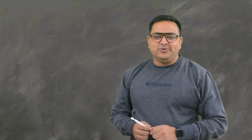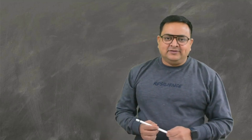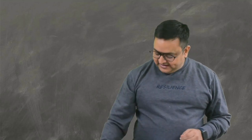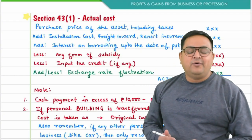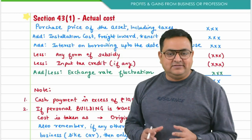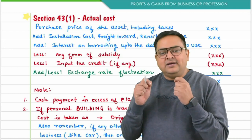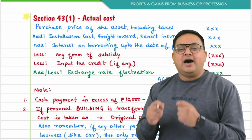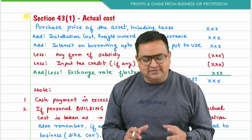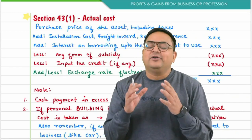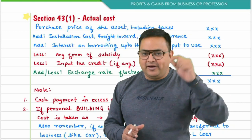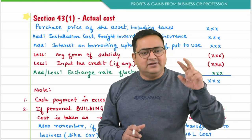Hi everyone, hope you're all doing great. Let's start with the PGBP revision. In the last lecture we were discussing Section 43B, which is a very important section. It says that there are certain expenses which are allowed only when they are actually paid by the assessee, and if they are not paid, they are not allowed. They should be paid up to the due date of return of income (ROI).